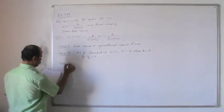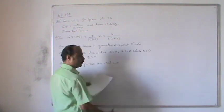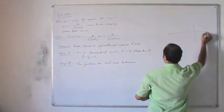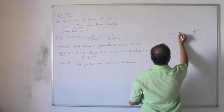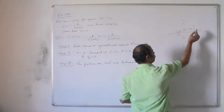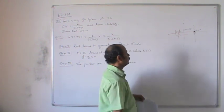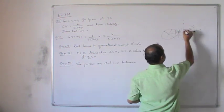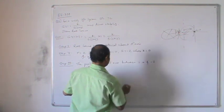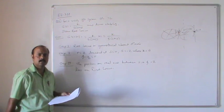Step 3: Determine the portion on the real axis that lies on the root locus. Moving from right to left: to the right of s = 0 there are 0 poles, so that segment is not on the locus. Between s = 0 and s = -2 there is 1 pole (odd), so this portion lies on the root locus. Beyond s = -2 there are 2 poles (even), so that region is not on the locus.